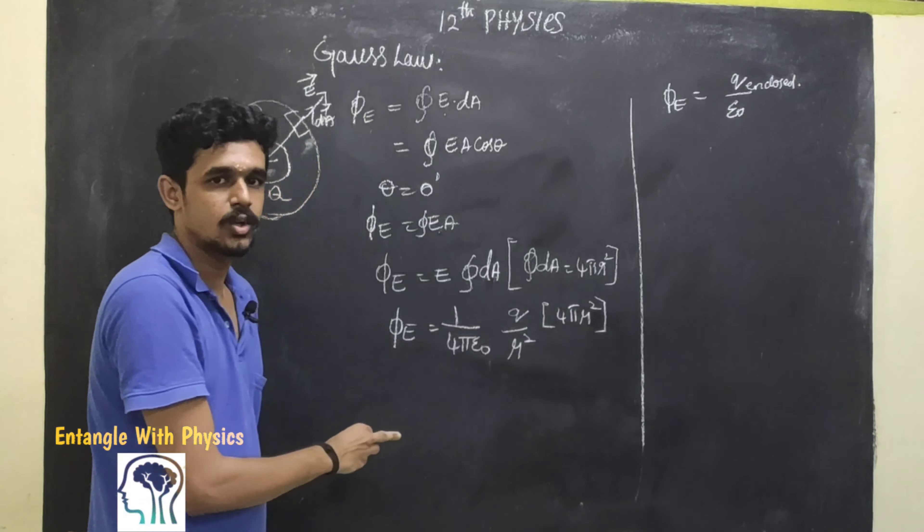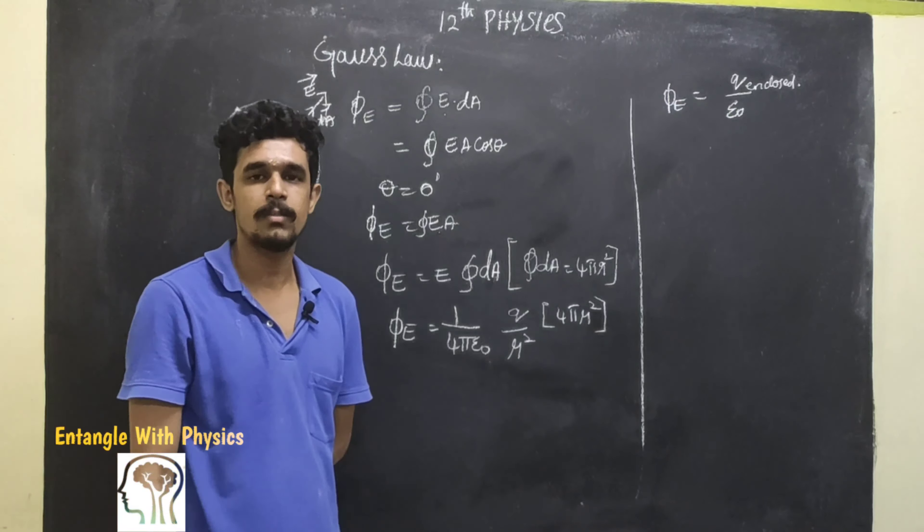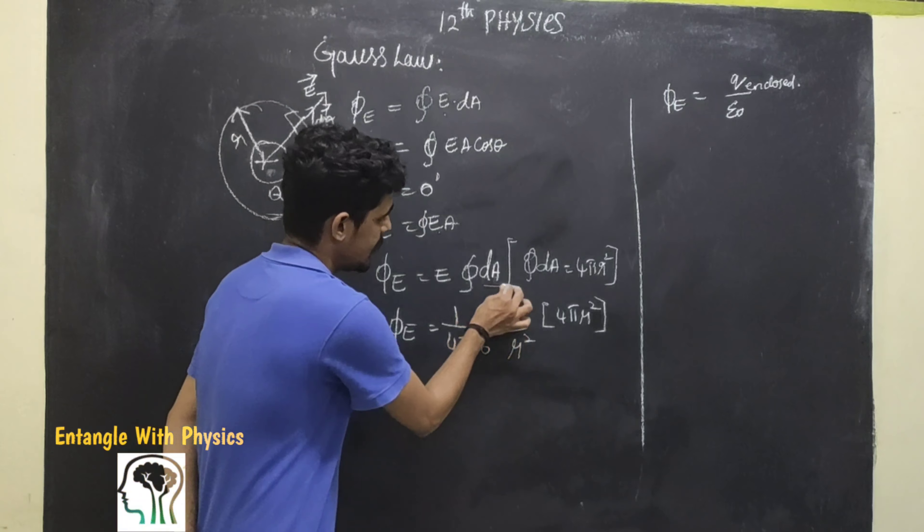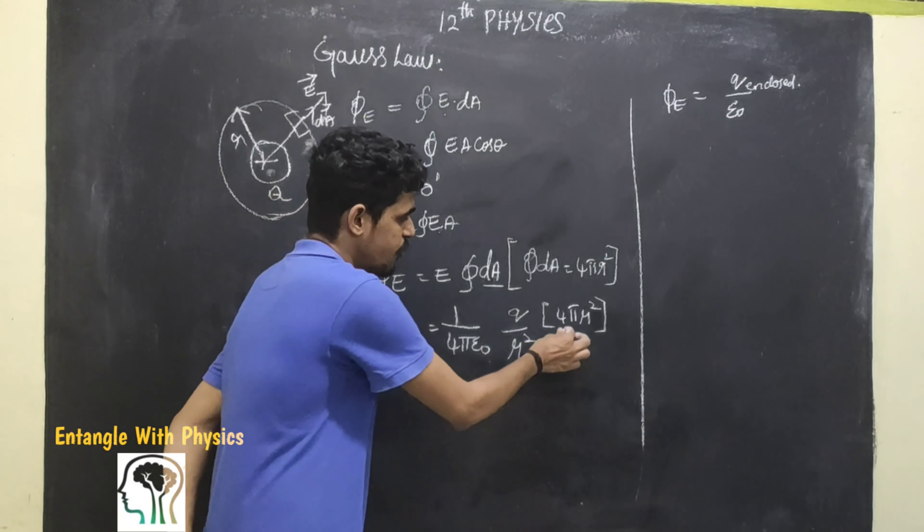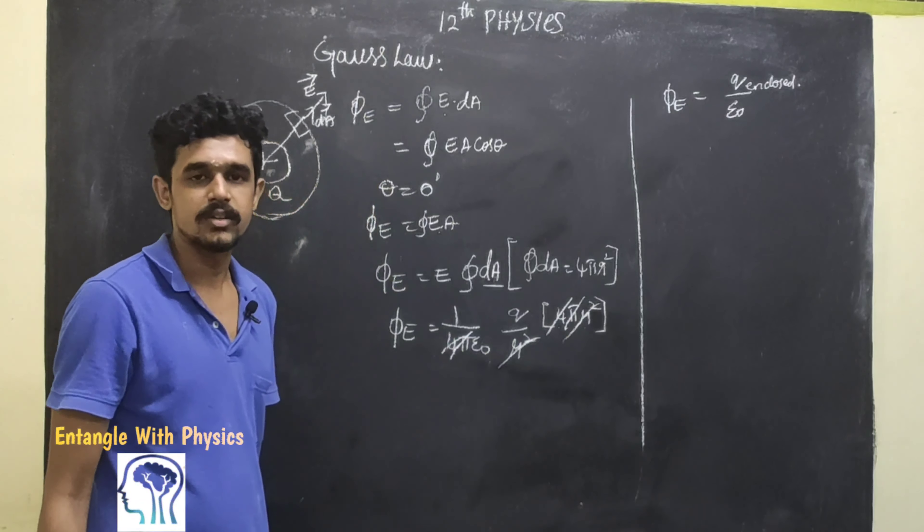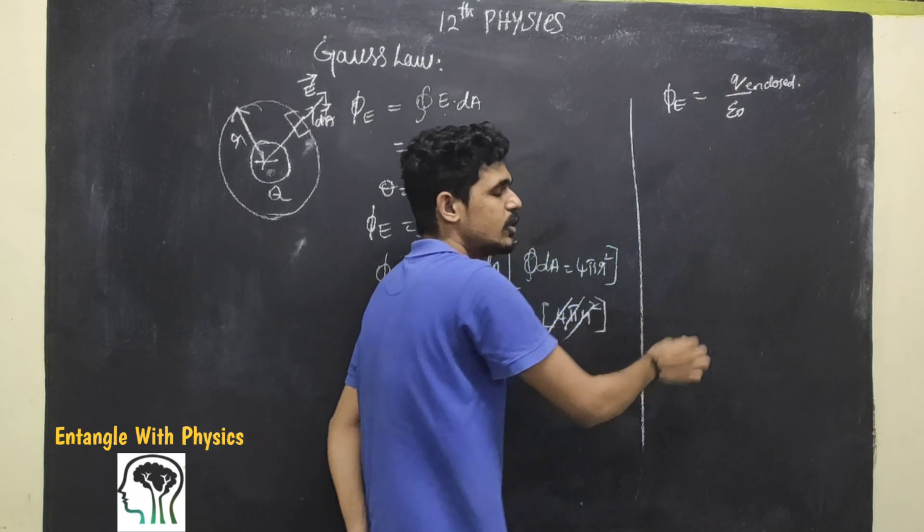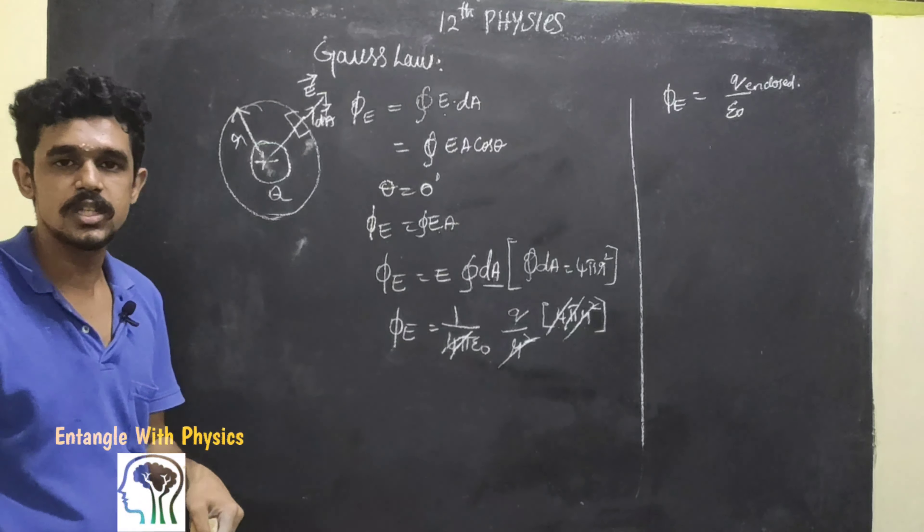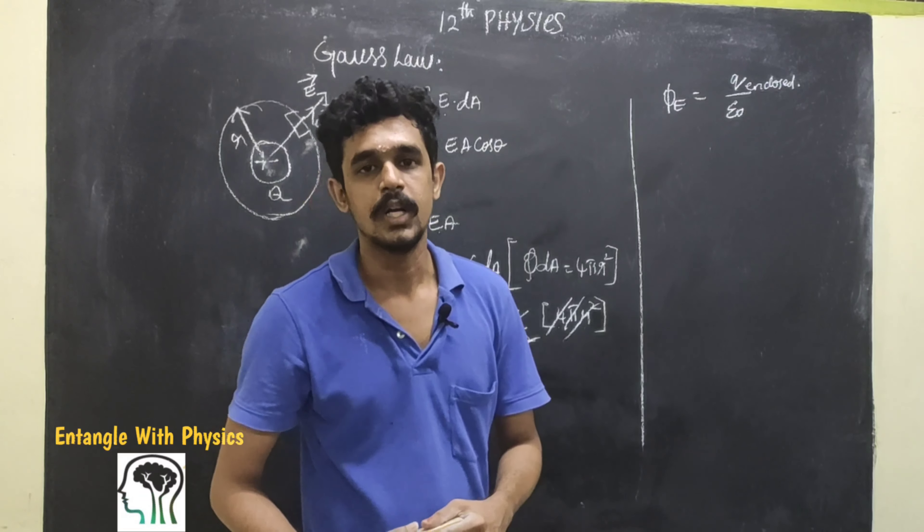φE equals 1/(4πε₀) times Q/R² times 4πR². The 4π cancels, R² cancels, and we get φE equals Q enclosed by ε₀.